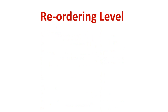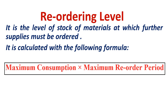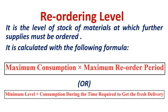Reorder level refers to the level at which we need to place an order with the supplier. It is calculated as maximum consumption multiplied by maximum reorder period. Maximum consumption may be monthly, weekly, or daily. The reorder period is the time it takes to receive the material after placing an order — that is, how many days, weeks, or months it will take for the next delivery to reach the organization. There is one more formula: minimum level plus consumption during the time required to get the fresh delivery. Both formulas give the same answer.